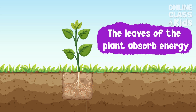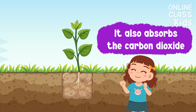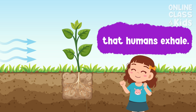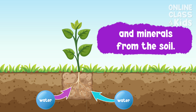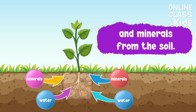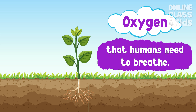The leaves of the plant absorb energy from the sunlight. They also absorb the carbon dioxide that humans exhale. The root of the plant takes water and minerals from the soil. In exchange, plants produce the oxygen that humans need to breathe.